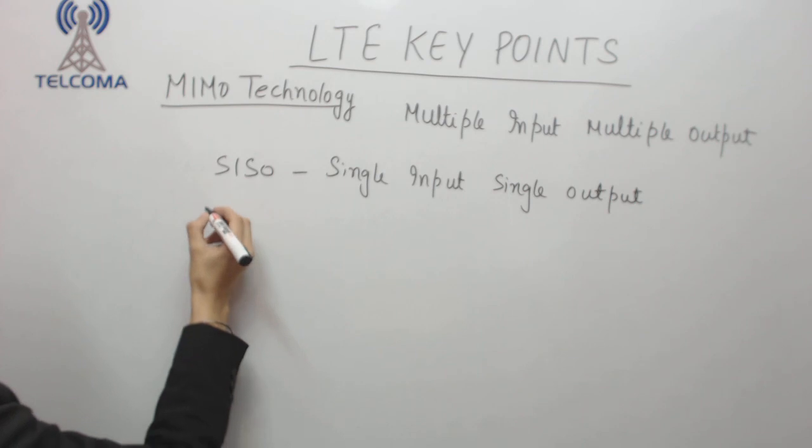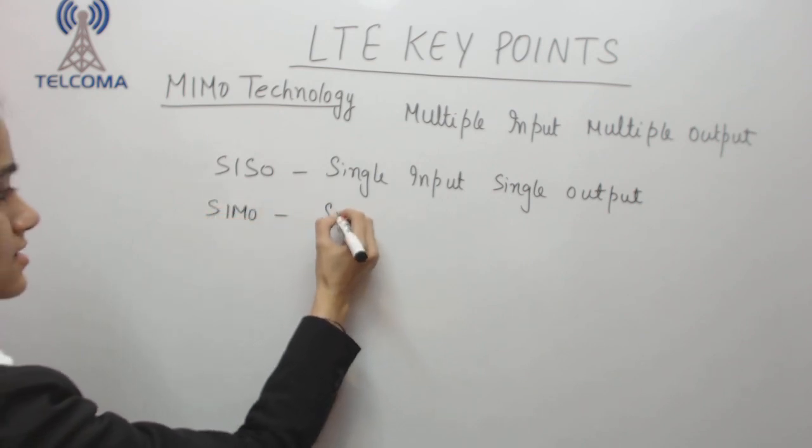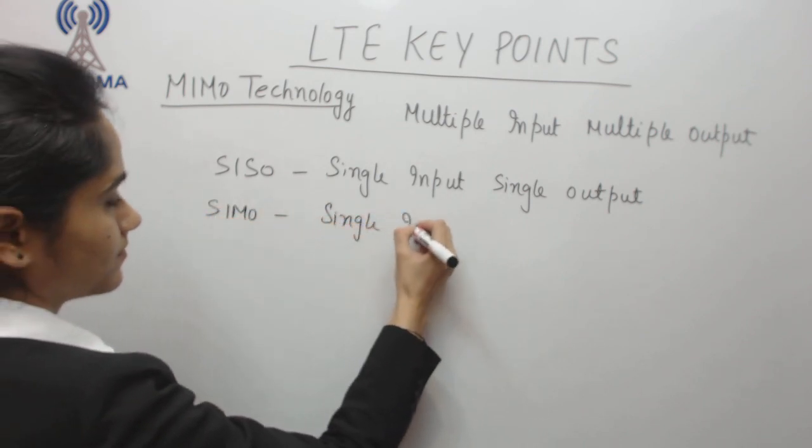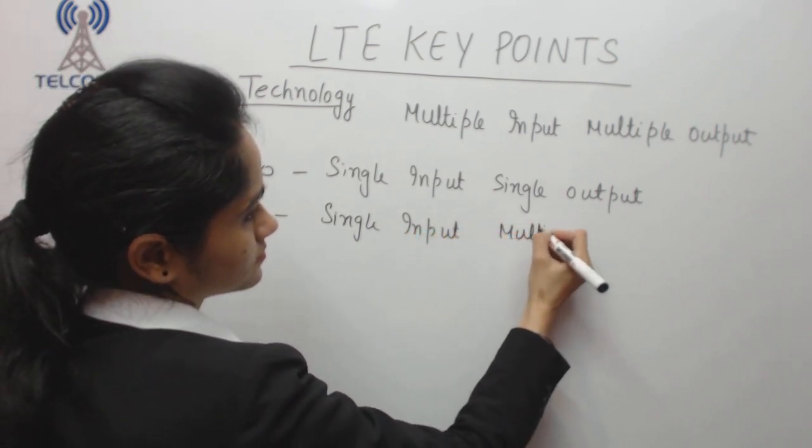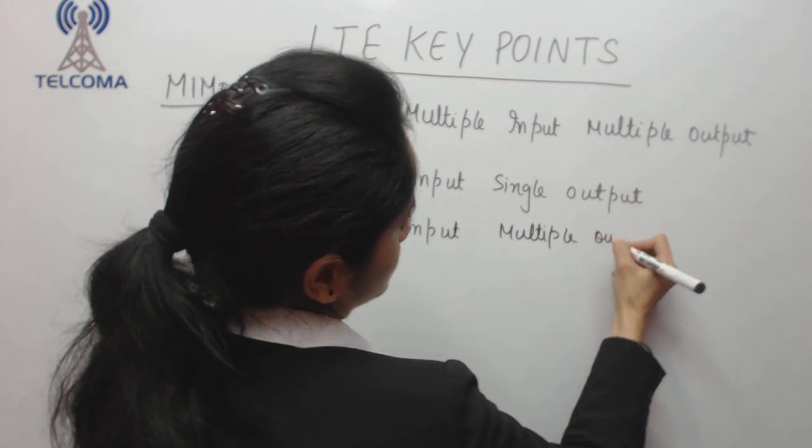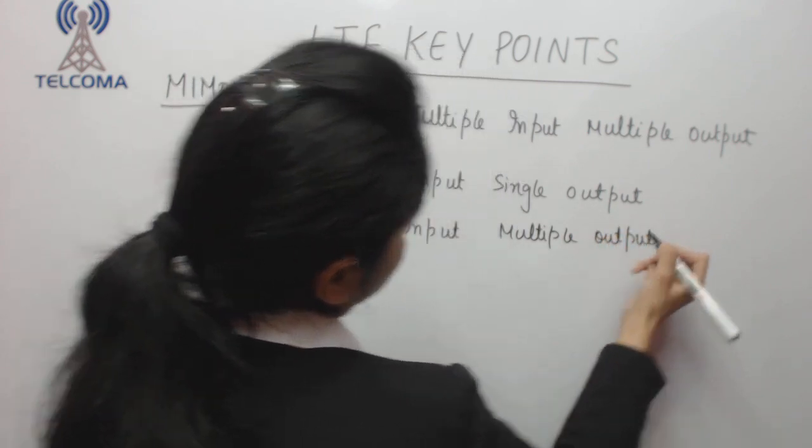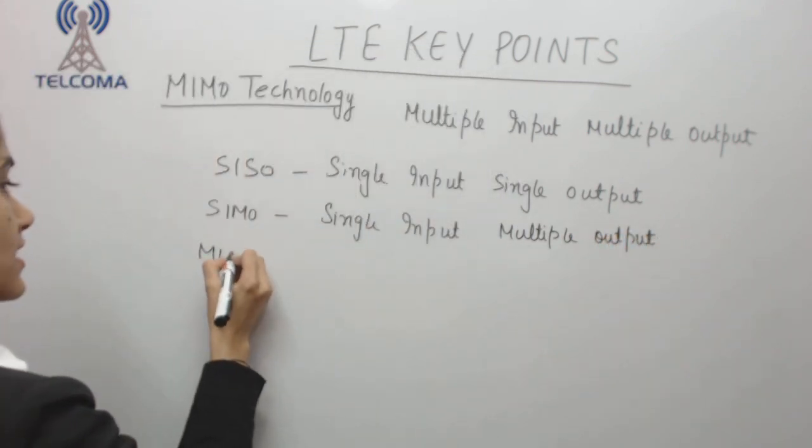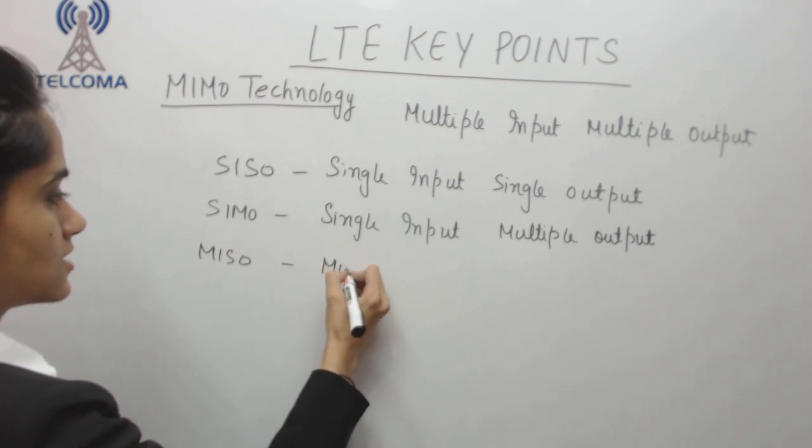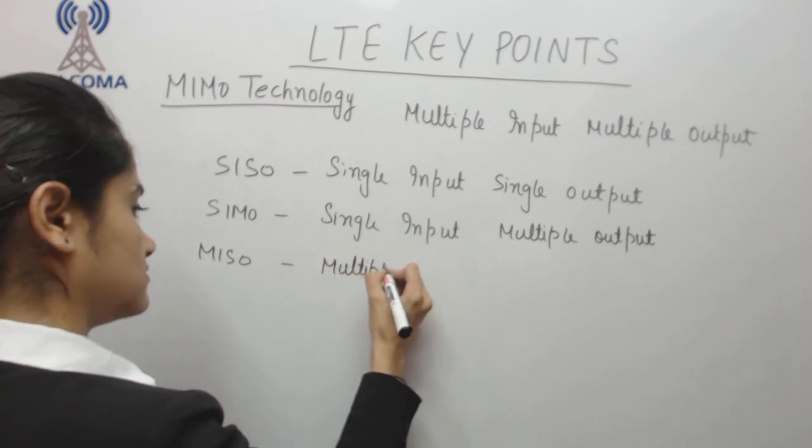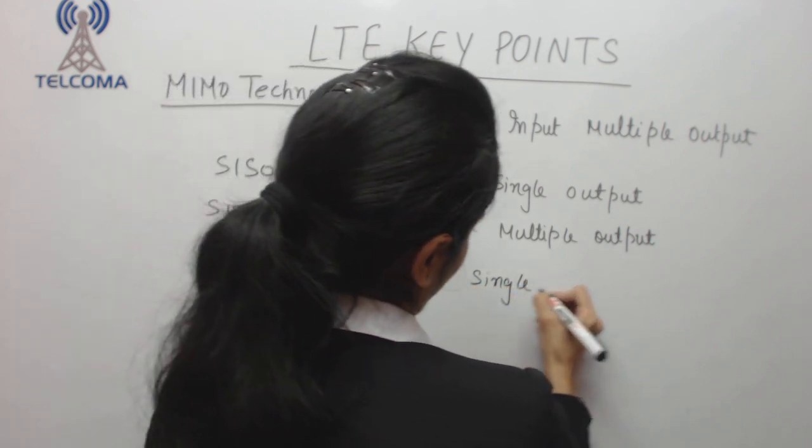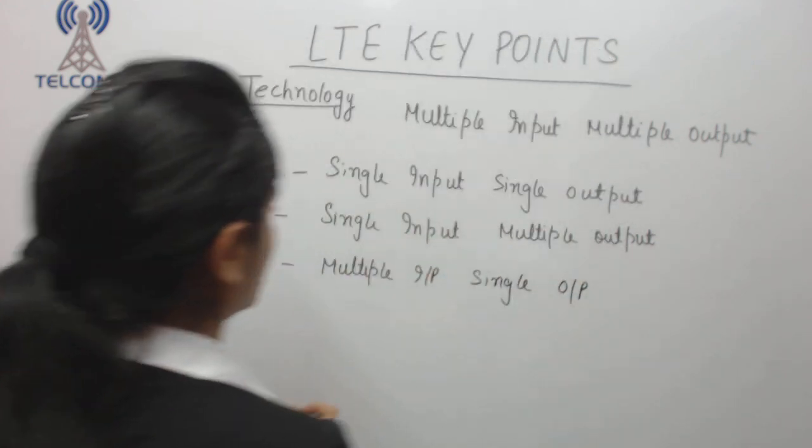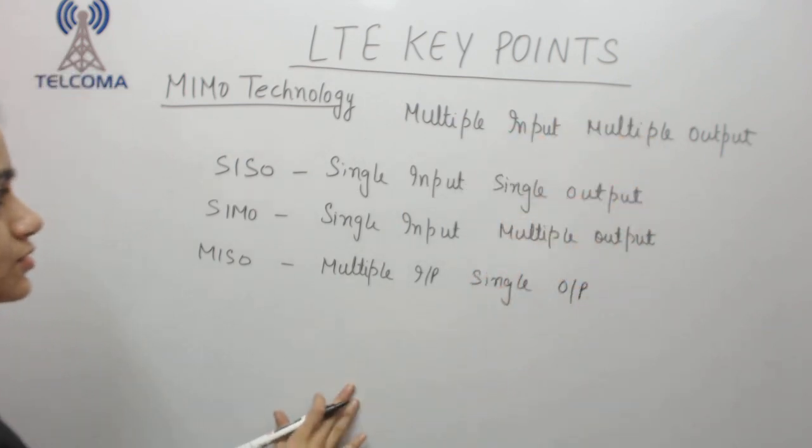We have SIMO which is single input multiple output. We have MISO as multiple input single output and we have MIMO which is multiple input and multiple output.